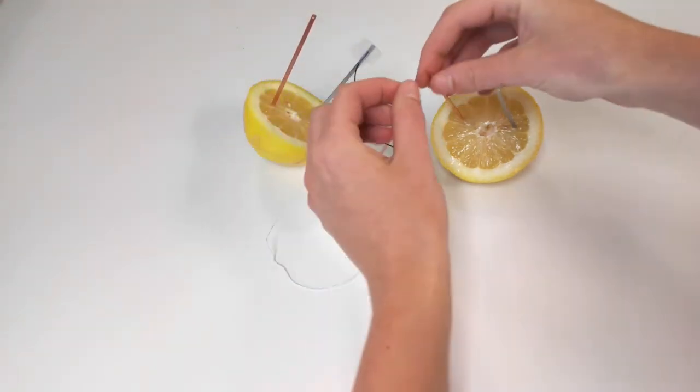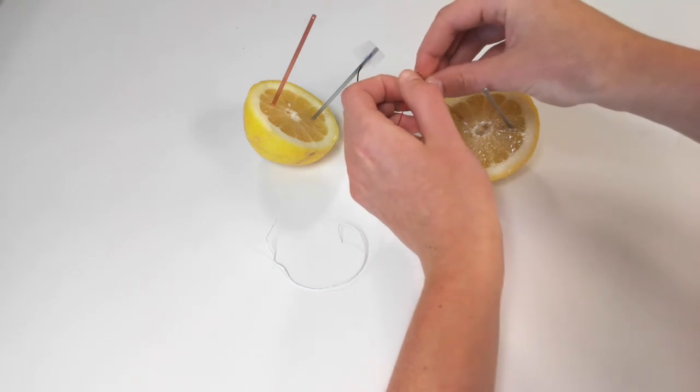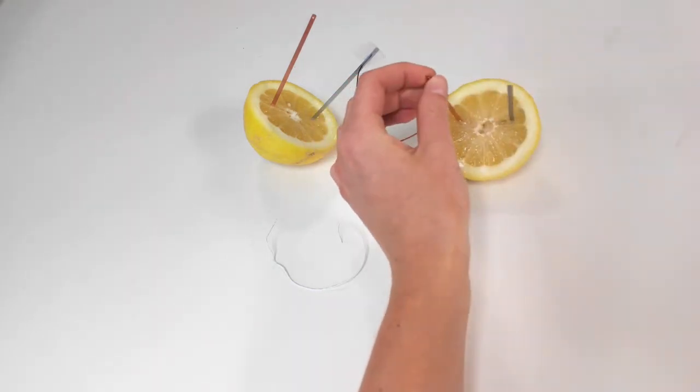Take the wire attached to the negative terminal and connect it in the same manner to the copper piece of the opposite lemon half.